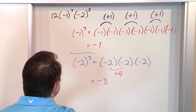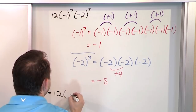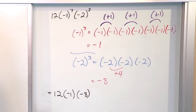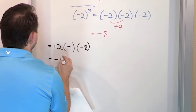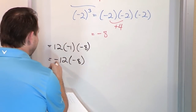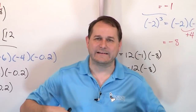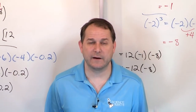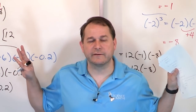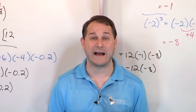So the problem boils down to 12 times negative 1 times negative 8. First, 12 times negative 1 gives negative 12, because positive times negative is negative. Then negative 12 times negative 8: 12 times 8 is 96, and negative times negative is positive. So the final answer is positive 96. We're just getting practice with multiplying and simplifying expressions involving negative and positive numbers. Follow along to the next lesson for more practice.